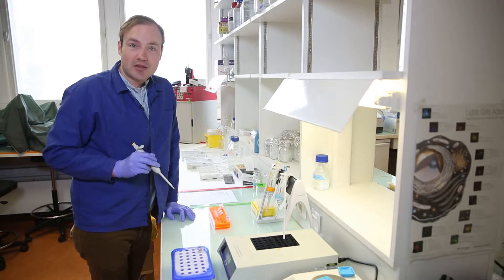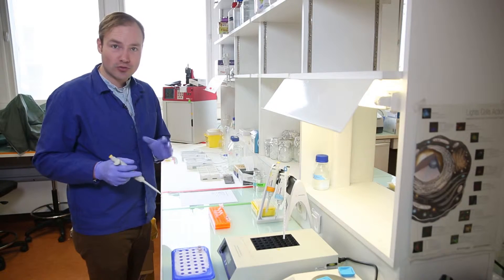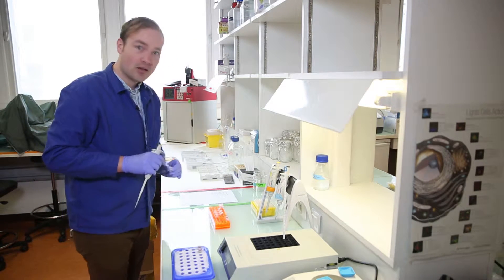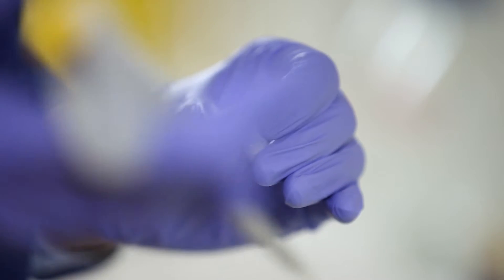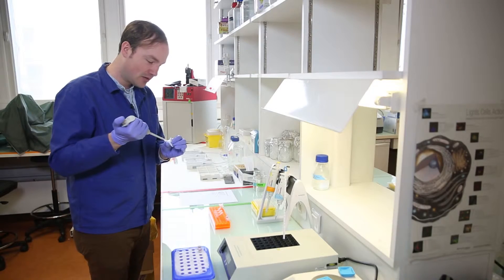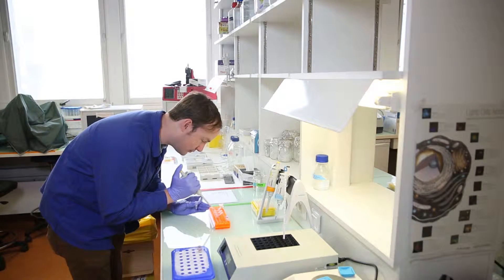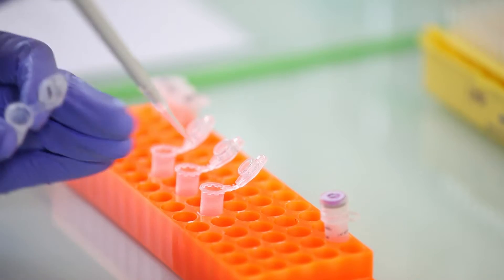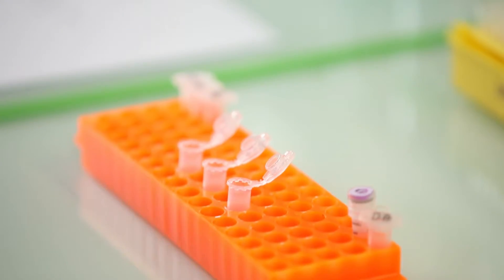Next, the plasmid. For this reaction, we'll be using PSB1C3, which is a standard biobrick plasmid. You can get the sequence from the biobrick registry, or we'll make it available on the site. The plasmid I'm using today has a concentration of 160 nanograms per microliter. I'll be adding 10 microliters of plasmid, and that gives me about one and a half micrograms of plasmid total.